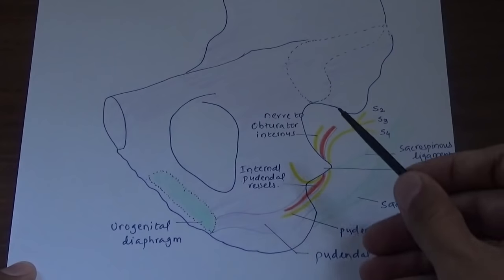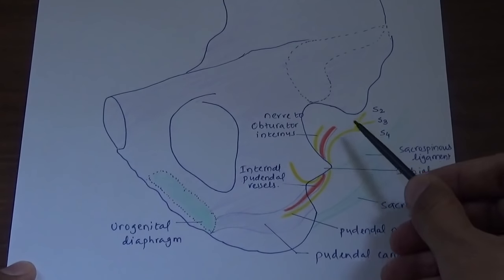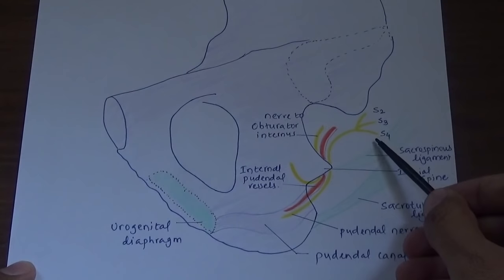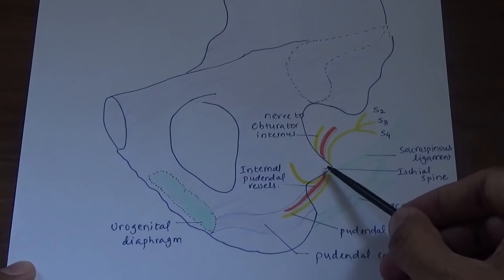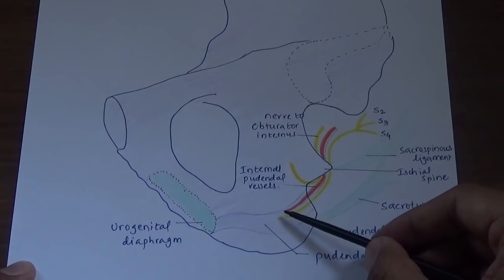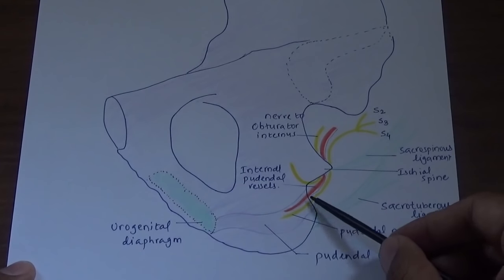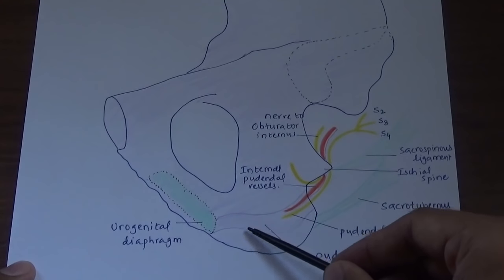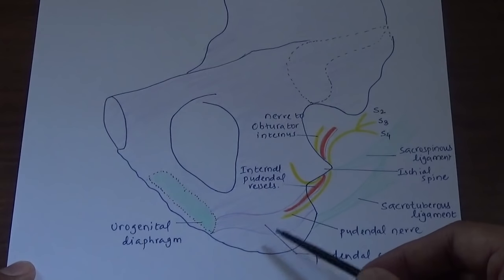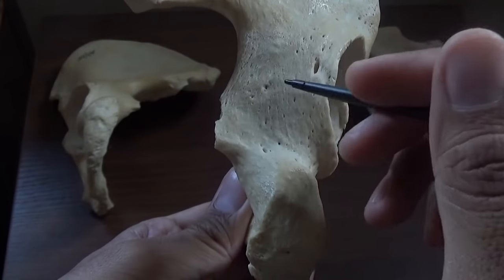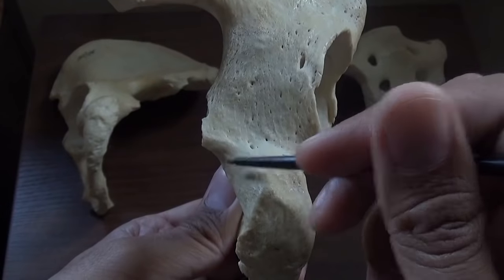A mnemonic for these three structures on the dorsal surface of the ischial spine from lateral to medial is PIN: P stands for pudendal nerve, I stands for internal pudendal vessels, and N stands for nerve to obturator internus. These structures remain on the dorsal aspect of the ischial spine, then enter the pelvic cavity through the lesser sciatic foramen. The nerve to obturator internus supplies that muscle, while the internal pudendal vessels and pudendal nerve enter the pudendal canal.